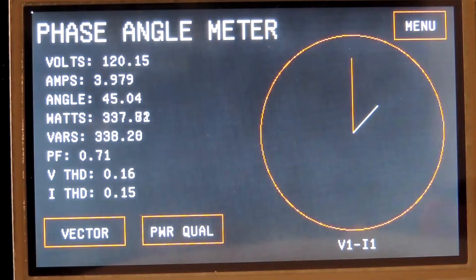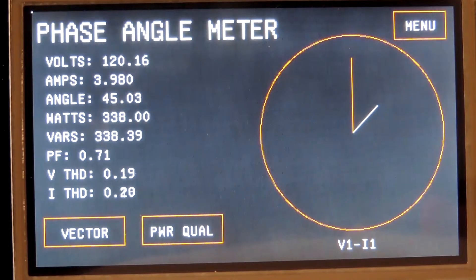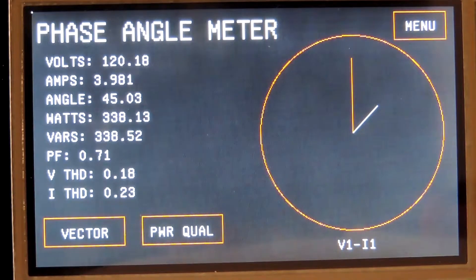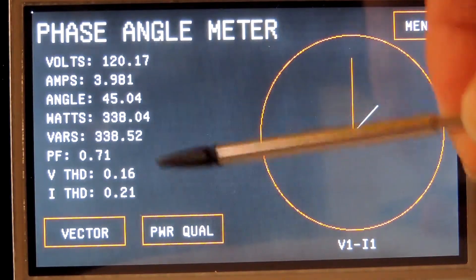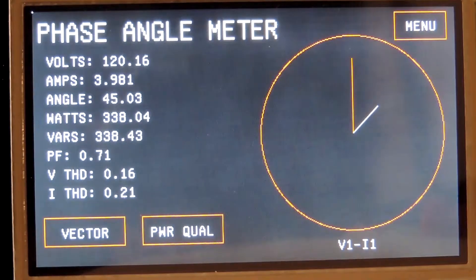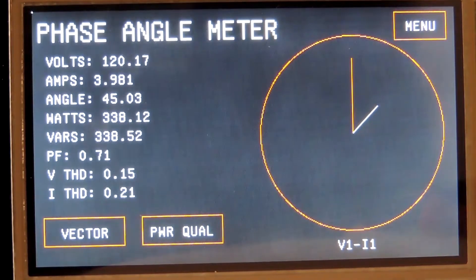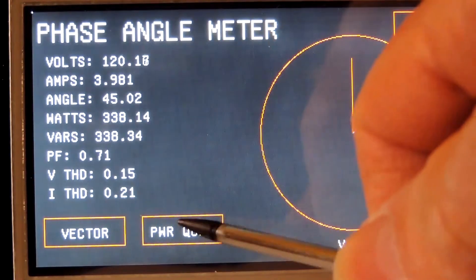You notice I just applied voltage and current. The Epic source is a little bit off, that's why it reads 120.17. The Epic source actually is at 120.21. The amps are a little different. I have set it 45 degrees, see the angle is 45.0405. The meter calculates and displays the watts, vars, power factor, and the harmonic distortion in percent of both the voltage and current.